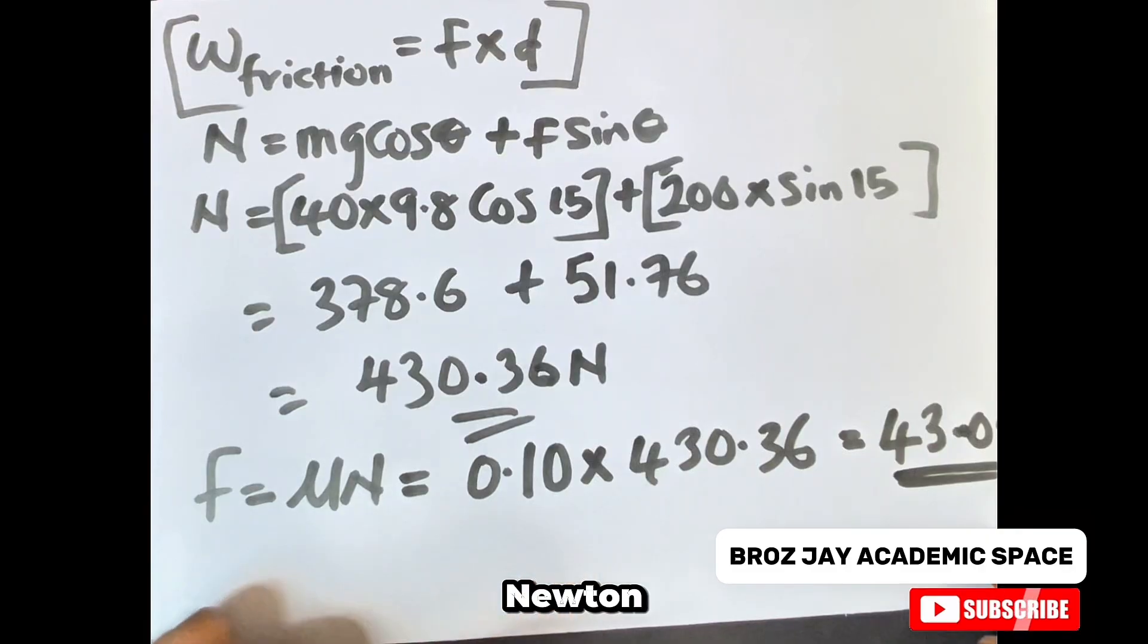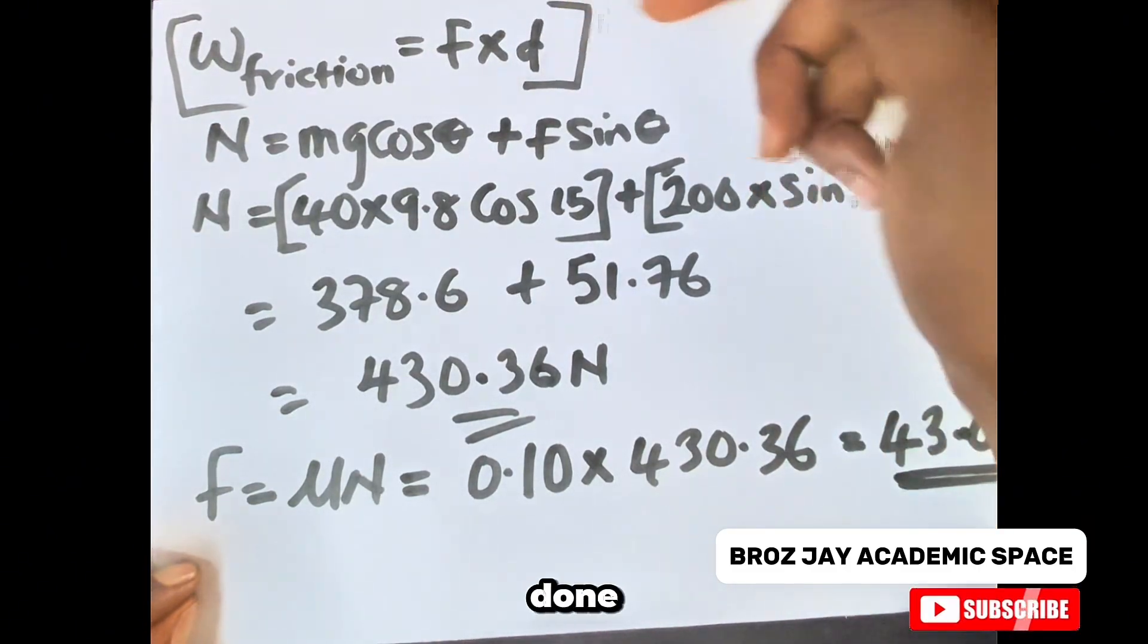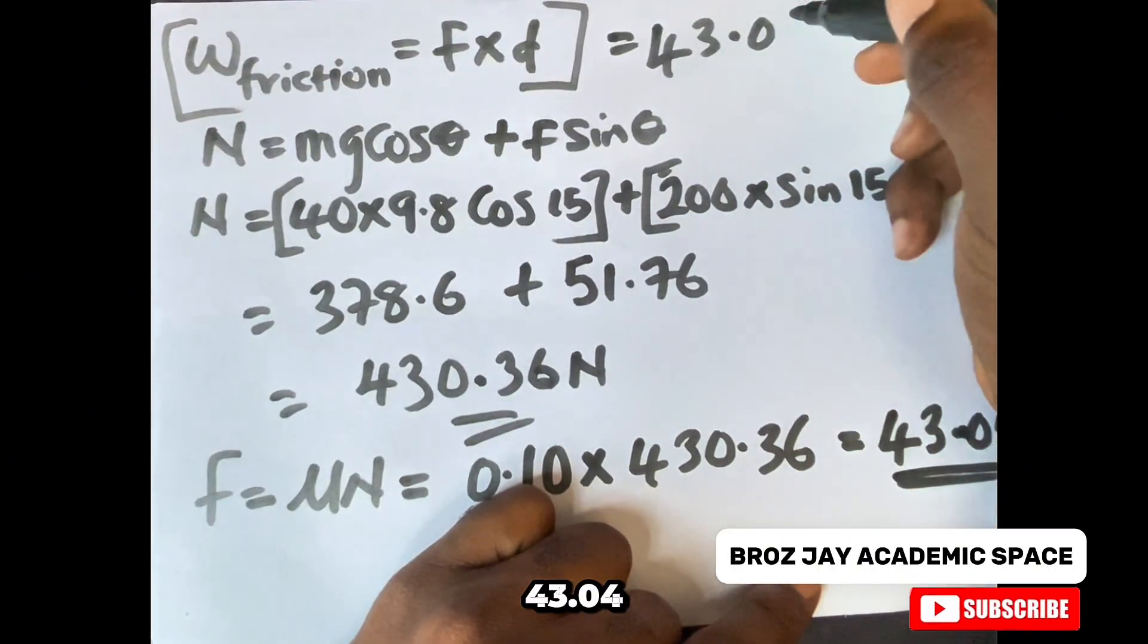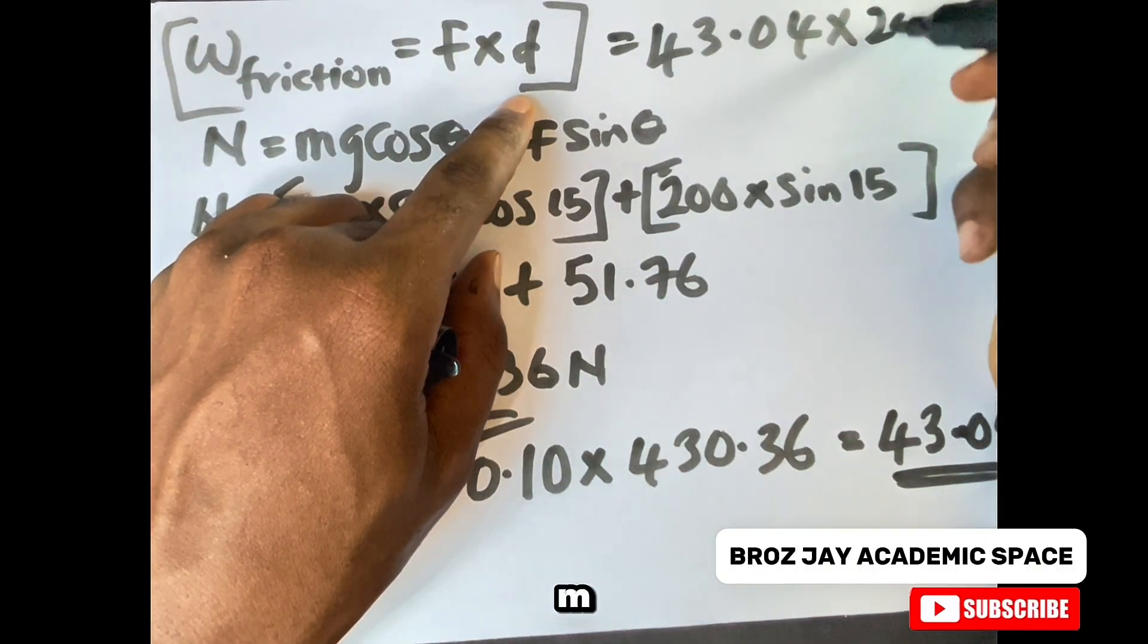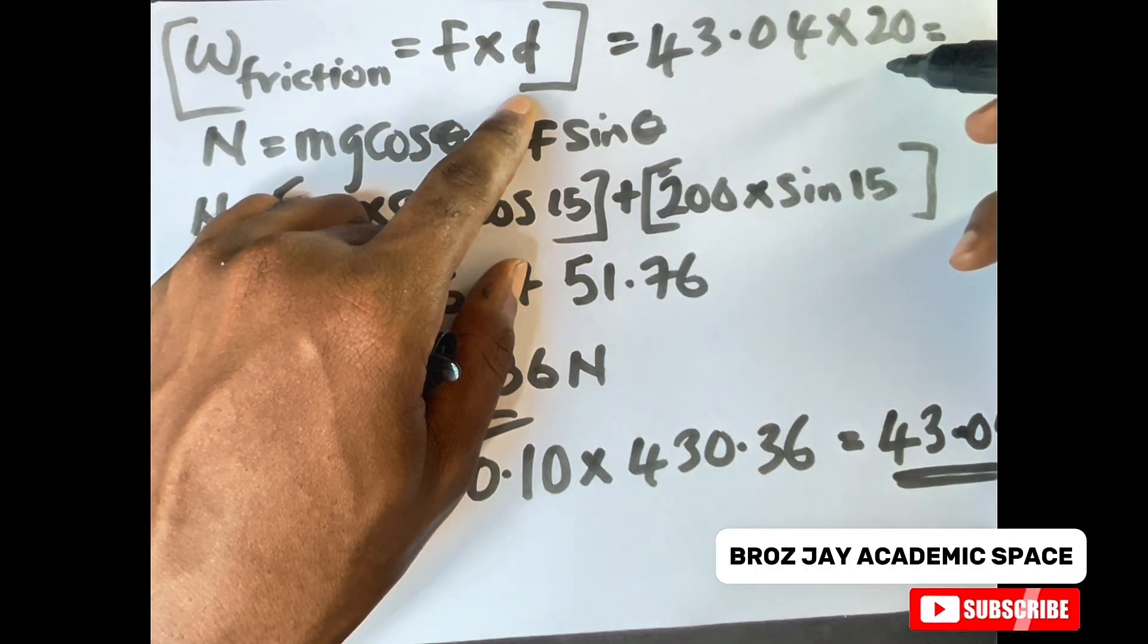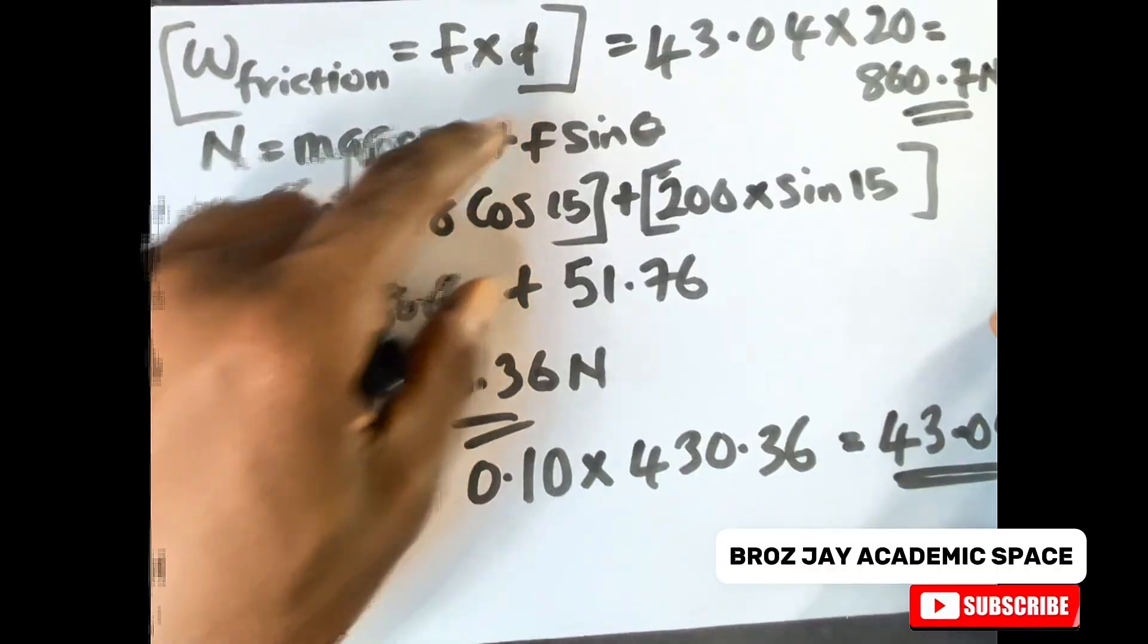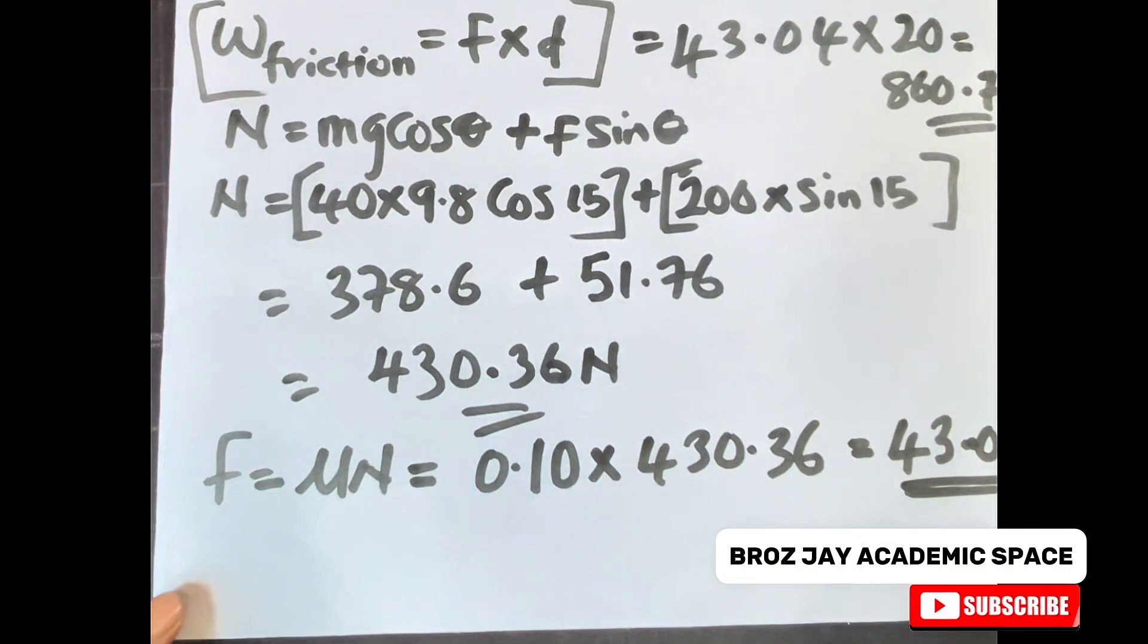After solving this, you come back to this equation: the work done against friction equals the force, which is 43.04, times the distance, which was 20 meters. Therefore our final answer will be 860.7 joules. That's your final answer for the work done against friction.